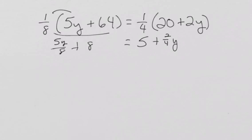But what would happen if we multiplied both sides by eight, which would be our common denominator? Well, in this case, we get five y plus eight.